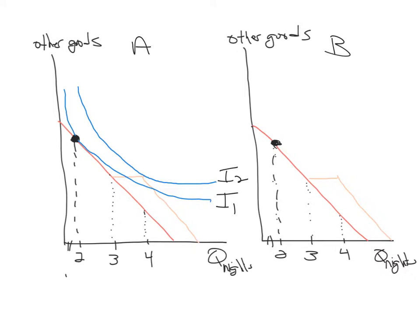So Angela will take advantage of the promotion and will in fact buy the third night in order to get the fourth one free. Now in the case of Betty, she's not going to take advantage of the promotion.